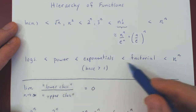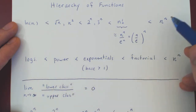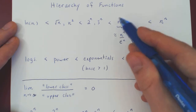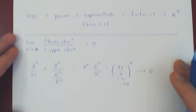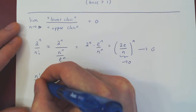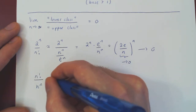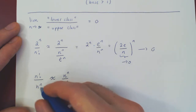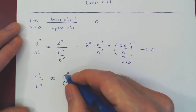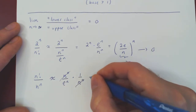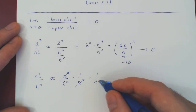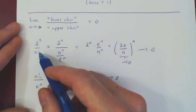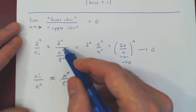Finally, if we take as our lower class a factorial over the upper class n to the n, the limit will also shrink to zero. Using our approximation: n factorial over n to the n — n factorial is roughly n to the n over e to the n. Dividing by n to the n is the same as multiplying by one over n to the n, so the n to the n terms cancel, and you're left with one over e to the n. As n goes to infinity, e to the n goes to infinity, and one over infinity shrinks to zero. That's really it for the heuristic, using what we derived previously that n factorial is roughly n to the n over e to the n.